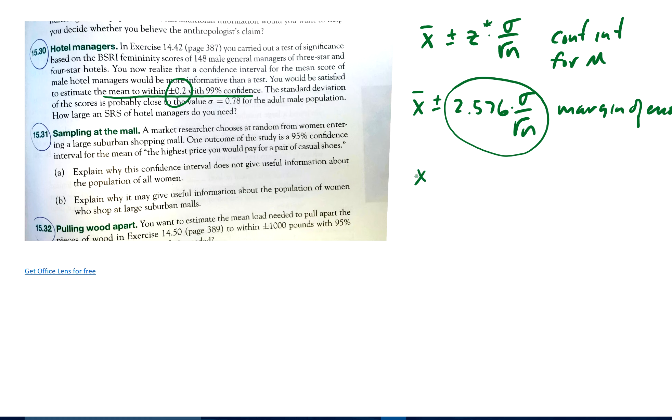So we want to estimate X bar plus or minus 0.2. So how big does N have to be? Because we know sigma. Sigma is 0.78. So we want 2.576 times 0.78 divided by the square root of N to be equal to 0.2.